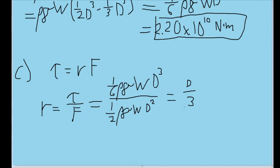This means that the effective line of action of the total force exerted by the water is at a distance of D divided by 3 above the bottom level of the dam. Now we just plug in our values, and this gets us 11.7 meters for the length of the moment arm.